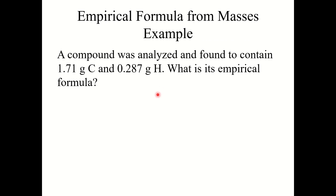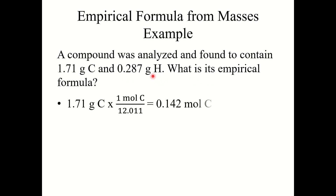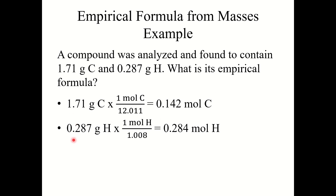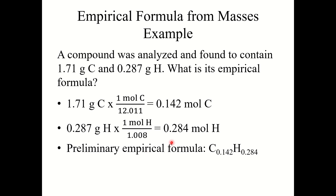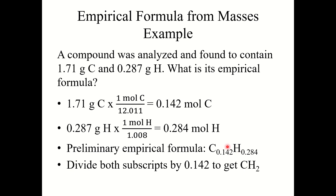For example: a compound was analyzed and found to contain 1.71 grams of carbon and 0.287 grams of hydrogen. What is its empirical formula? First, convert to moles: 1.71 ÷ 12.011 = 0.142 moles carbon; 0.287 ÷ 1.008 = 0.284 moles hydrogen. Write the preliminary empirical formula with those as subscripts: C0.142H0.284. Then divide both by the smaller number (0.142): you get C1H2. So the empirical formula is CH2.